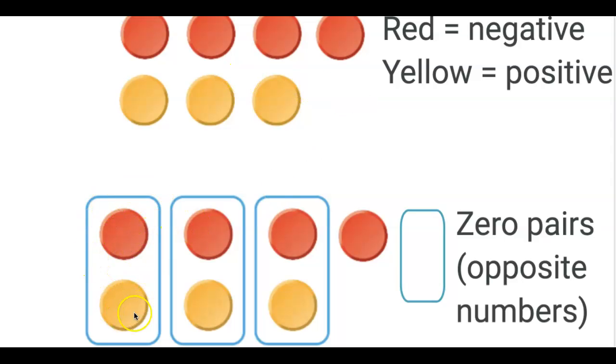This is how they're going to create zero pairs when they line up the number of integers that they're using for their expression. Where they have a red and a yellow, they use the shape to encircle both chips, and then that's a zero pair.